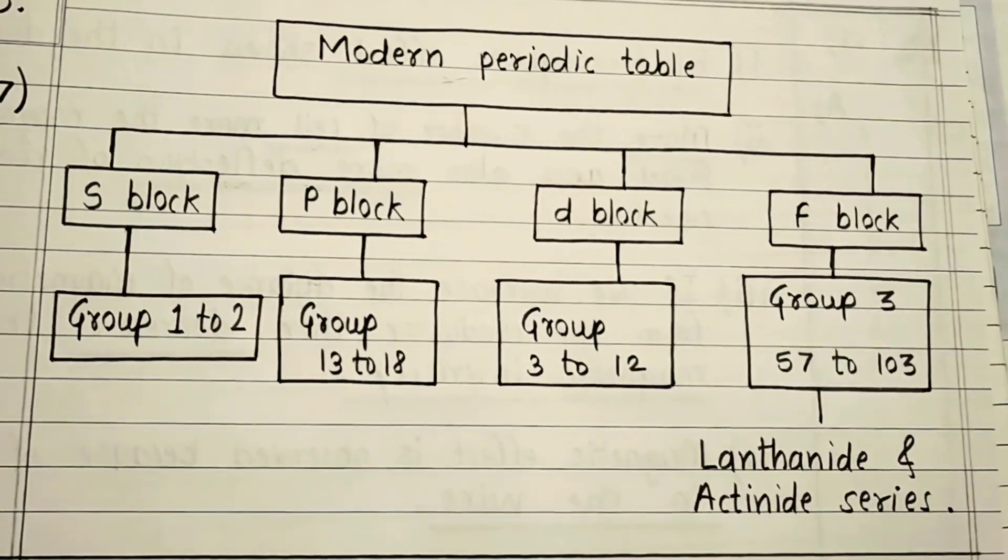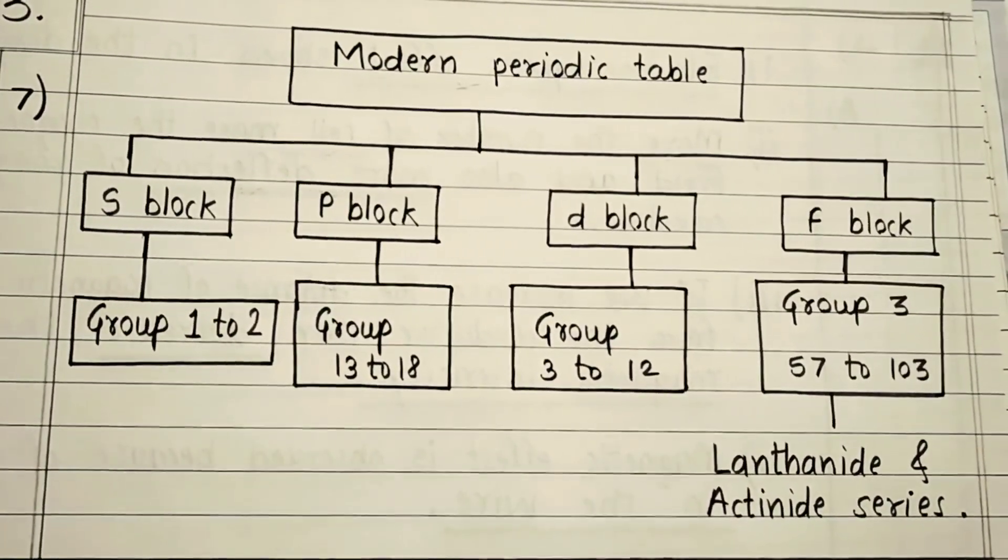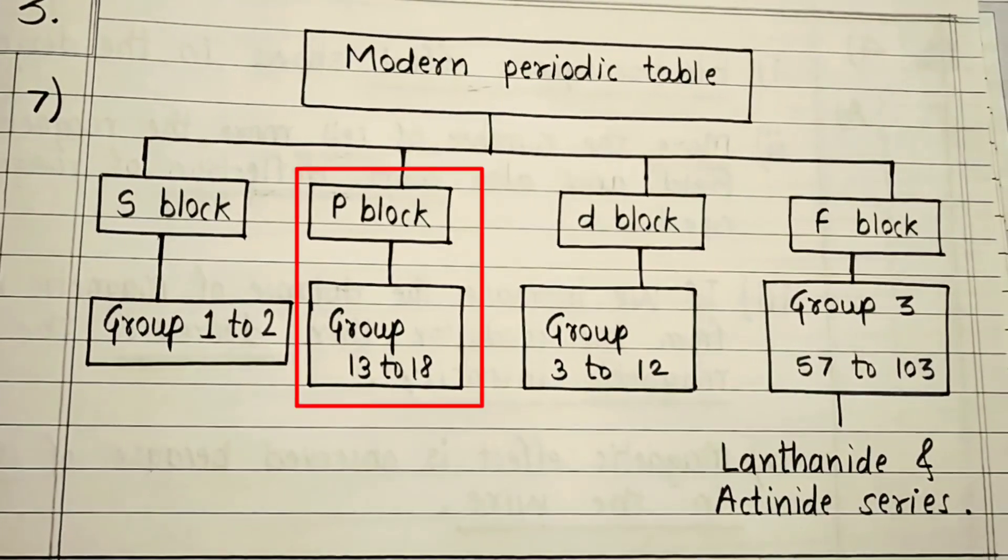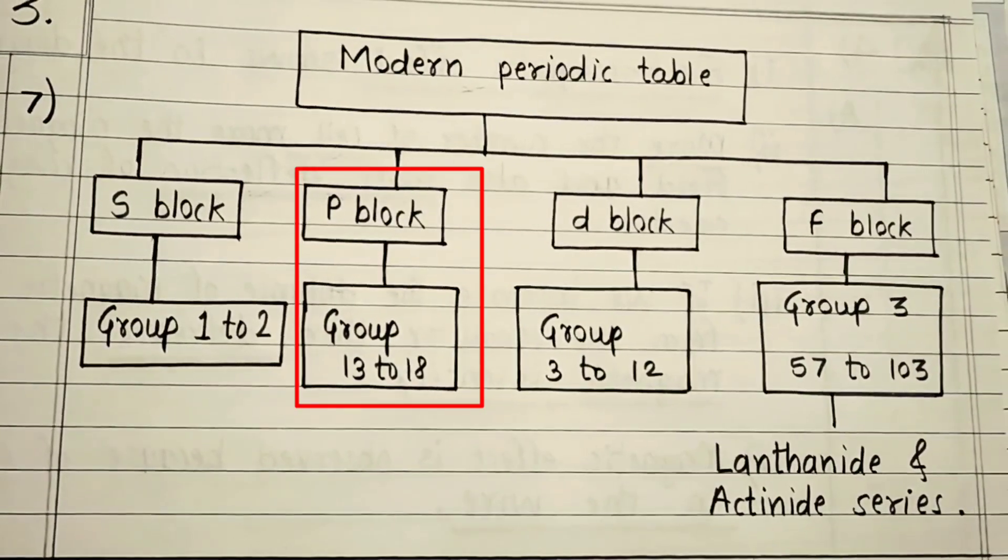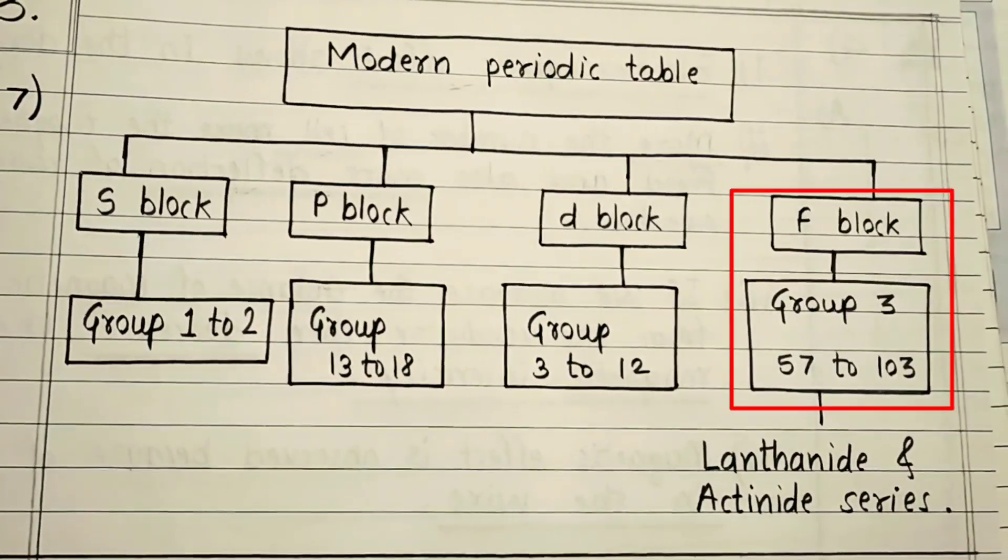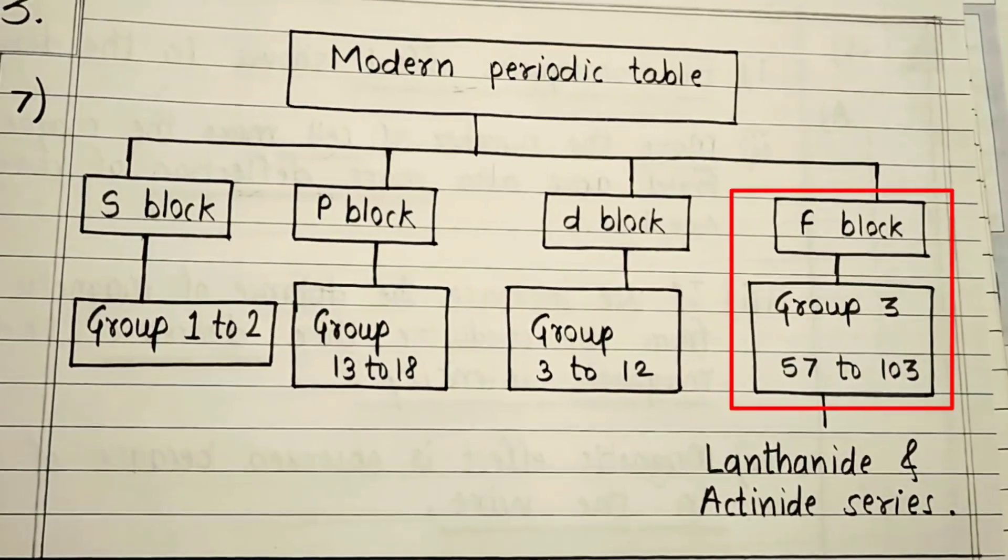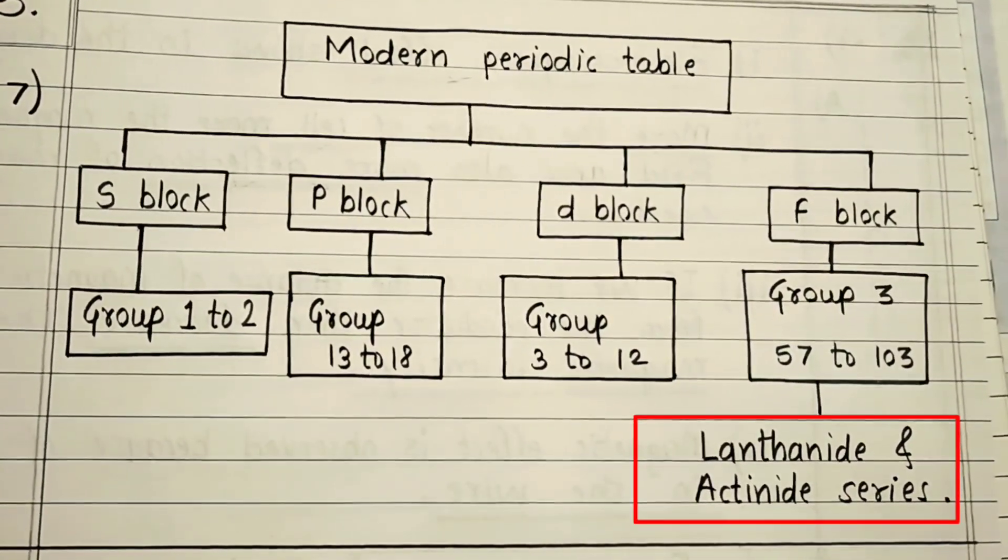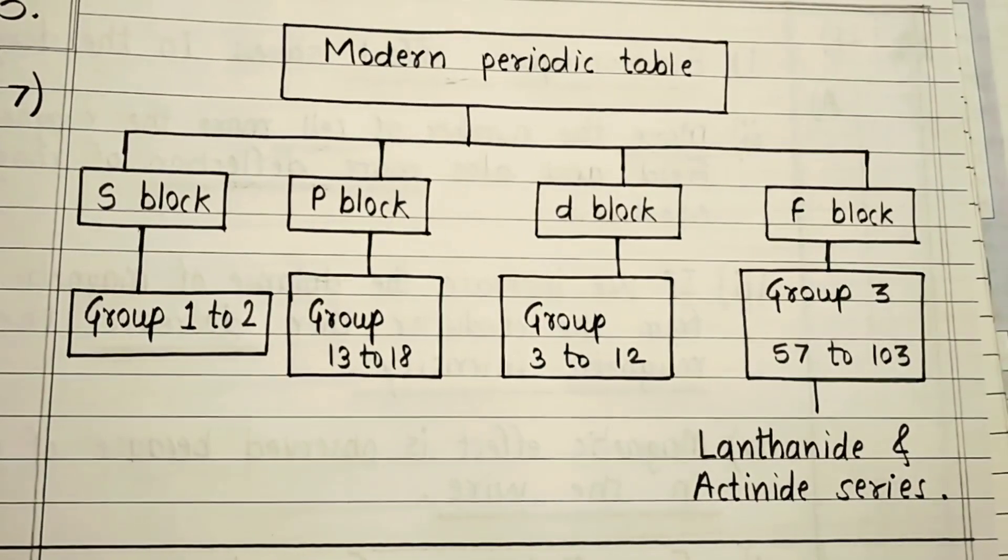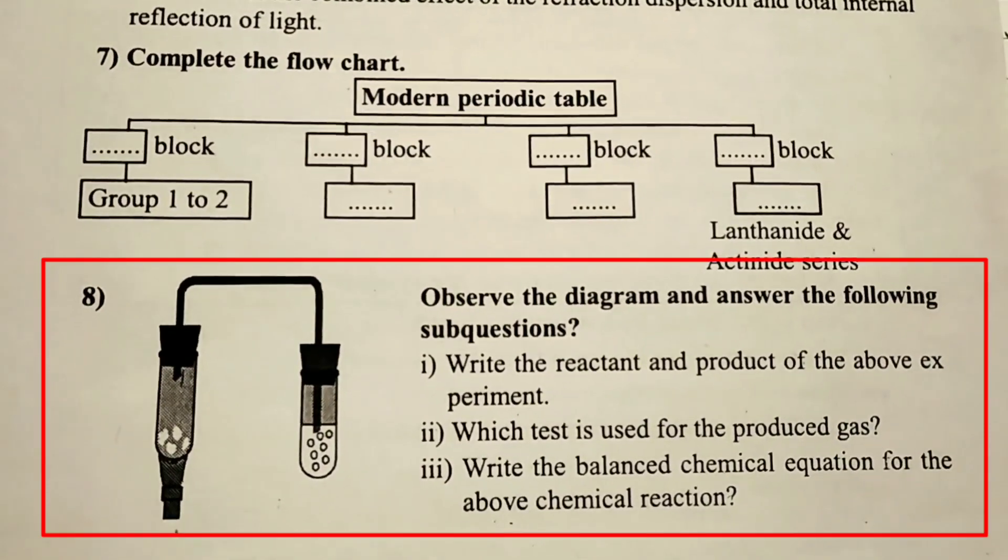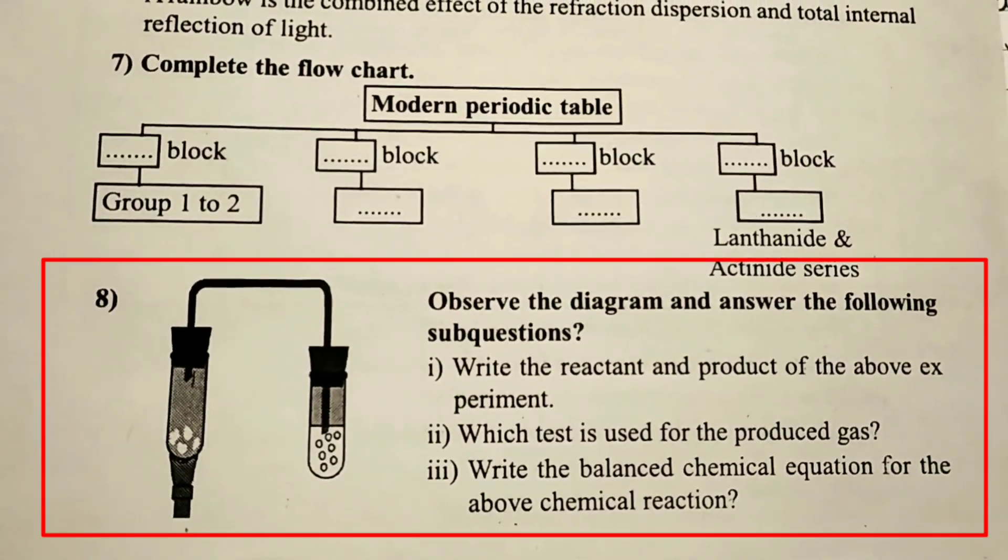Question 7: Complete the flowchart. Modern periodic table. S block: Group 1 to 2. P block: Group 13 to 18. D block: Group 3 to 12. F block: Group 3, 57 to 103, Lanthanide and Actinide series.